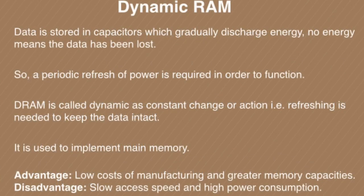Next, Dynamic RAM: data is stored in capacitors, which gradually discharge energy. No energy means the data has been lost, so a periodic refresh of power is required in order to function. DRAM is called 'dynamic' because constant refreshing is needed to keep the data intact inside it.